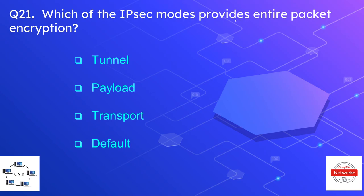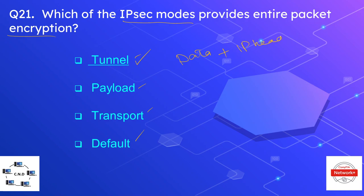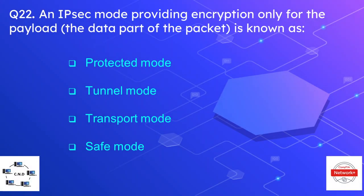Question number twenty-one is: which of the IPsec modes provides entire packet encryption? The options are tunnel, payload, transport, or default. The correct option is tunnel mode. In tunnel mode, IPsec encrypts the entire packet — meaning both the data and the IP header, including the IP address of the client.